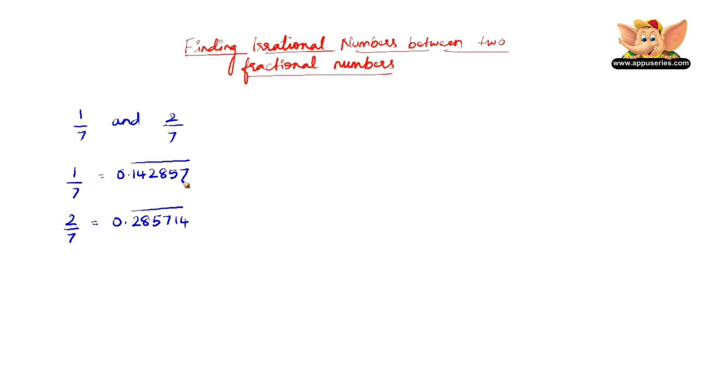So all we have to do is find an irrational number between these two numbers. As we know, irrational numbers are non-recurring and non-terminating decimals.